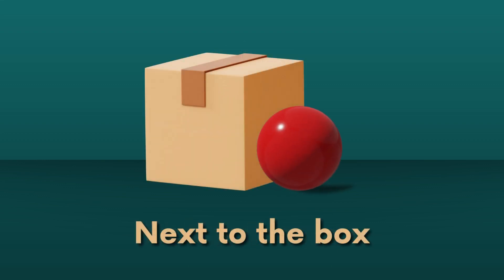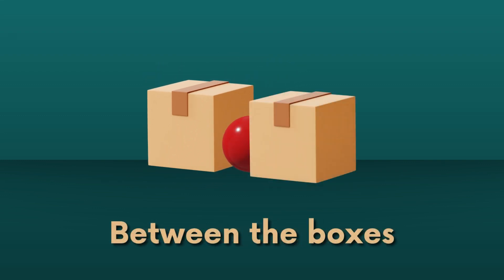The preposition 'next to' describes an object's placement in close proximity or adjacent to another object. For example, 'the ball is next to the box' means that the ball is located adjacent to the box. The preposition 'between' indicates that an object is positioned in the middle of two or more objects. For example, 'the ball is between two boxes' means that the position of the ball is in the middle of the two boxes.